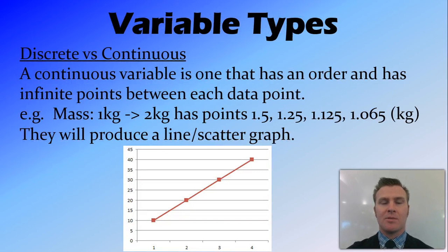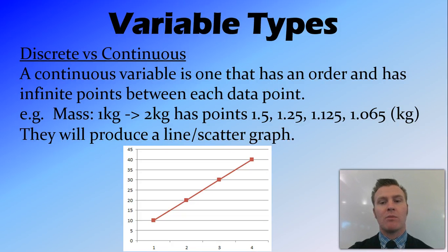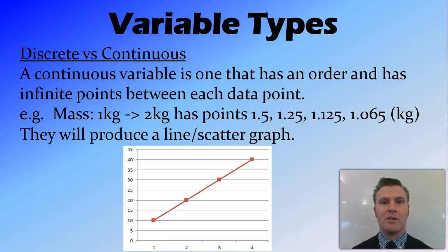There are two types of variables, and these can relate to both your independent and dependent variables. A continuous variable is one that has an infinite number of data points between each point and has a defined order. For example, mass is a continuous variable — between 1 kg and 2 kg there's 1.5, then 1.25, then 1.125, and so on indefinitely. When you graph a continuous variable you'll get a line or scatter graph, and that's what we want for this experiment.